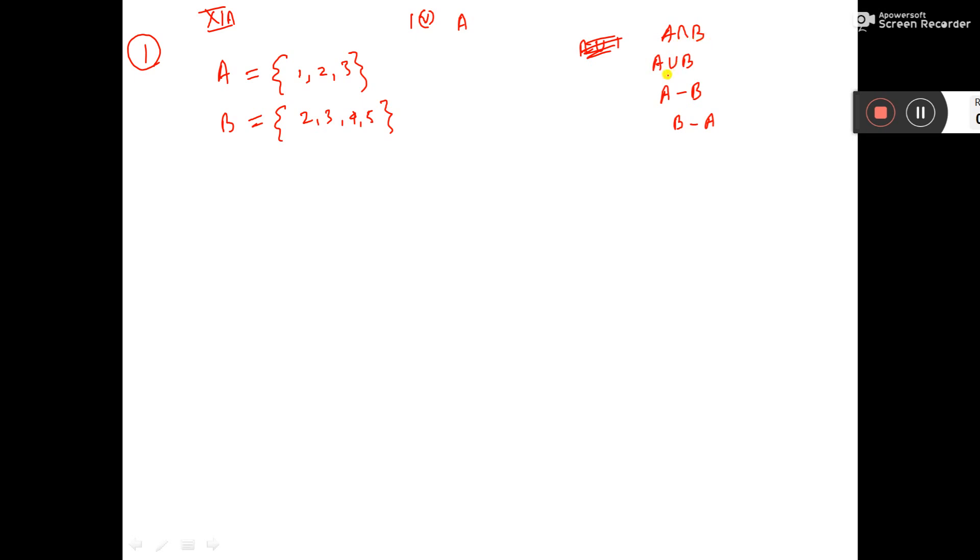We have to find A intersection B, A union B, A minus B, B minus A.